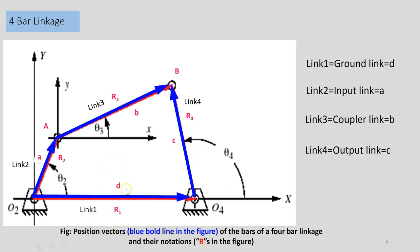When it comes to the length of the links, we start from link 2, the input link, and denote the lengths as A, B, C, and D. It is important to remember that even though link 1 is the ground link, we start naming the link lengths from the input link. So the input link has length A, the coupler link has length B, the output link has length C, and the ground link has length D.